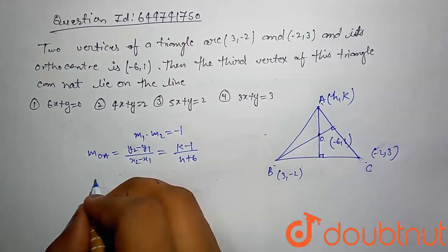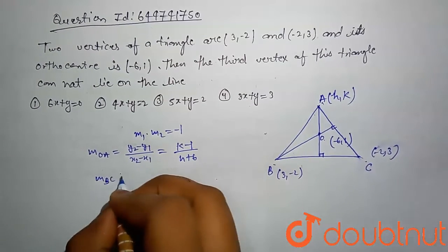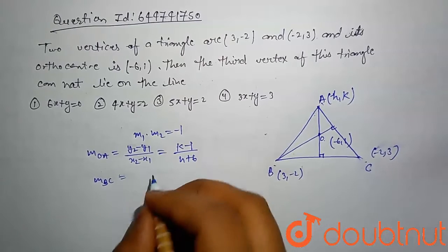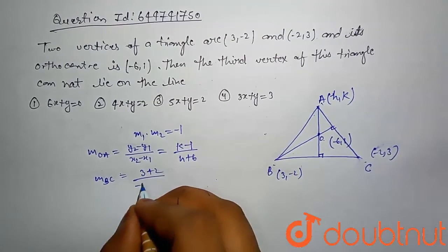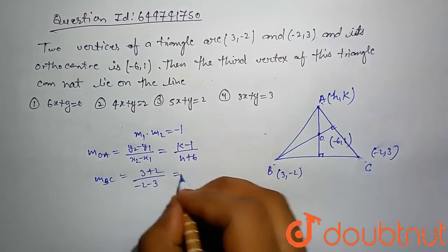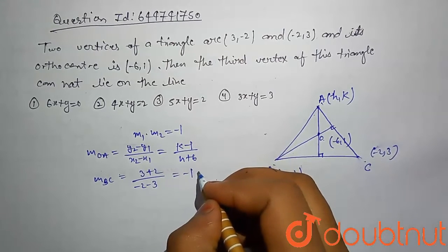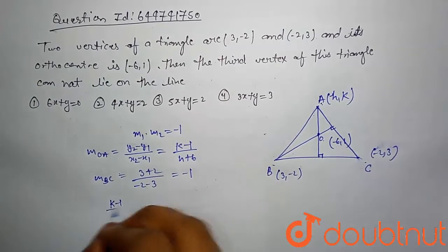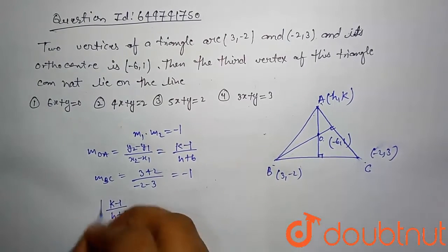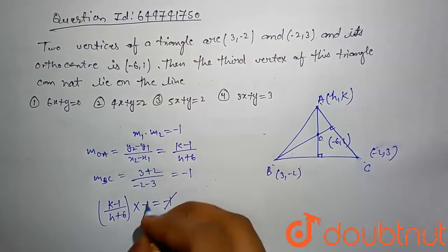And mBC is equal to (3 + 2) divided by (-2 - 3), which is 5 divided by -5, which is -1. Hence product of these two is equal to -1. [(k - 1)/(h + 6)] × (-1) = -1.